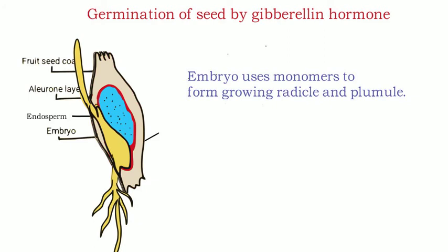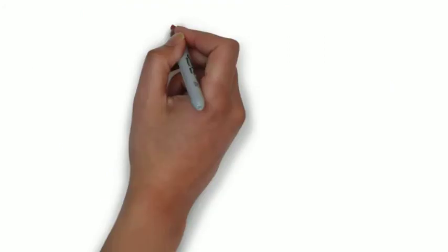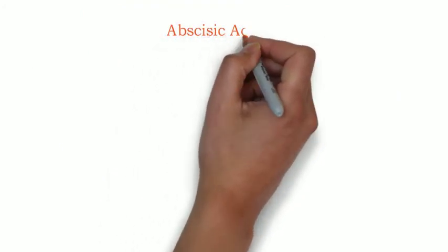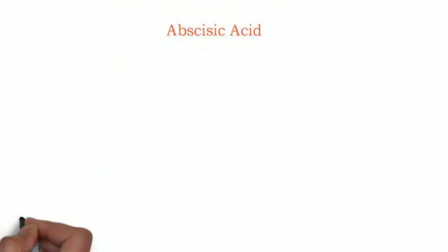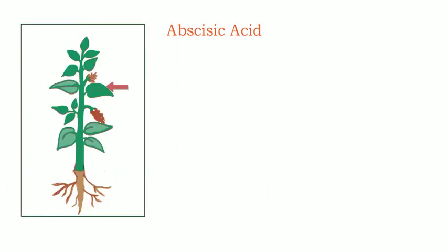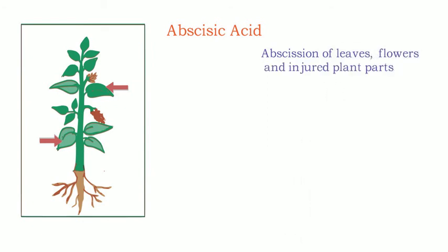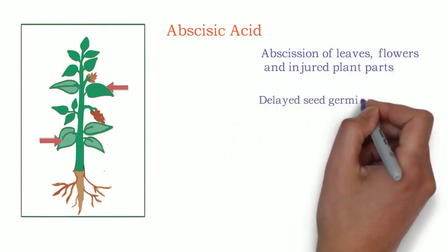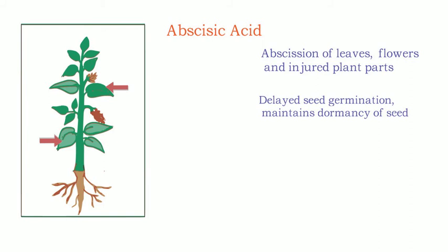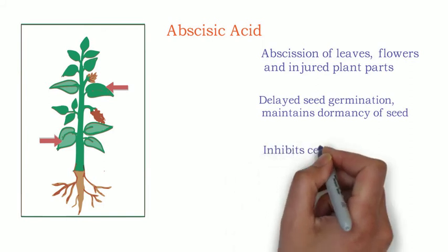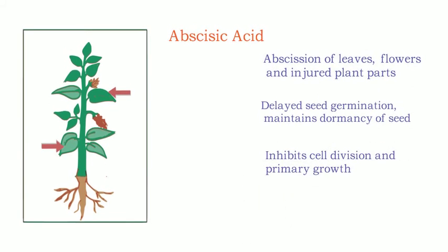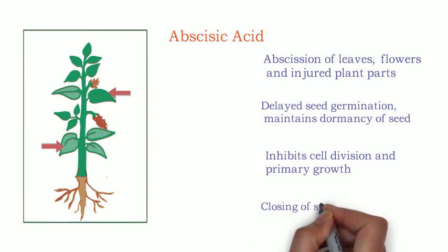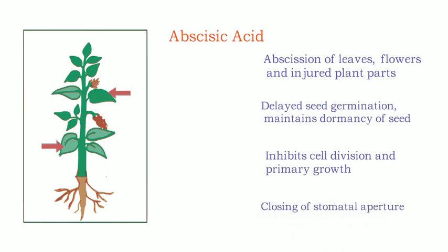So far we have discussed hormones that are growth promoters. Now we will look at growth inhibitor hormones. The next hormone is abscisic acid. The name itself gives an idea about its function — abscission. It is the hormone which helps in abscission of leaves, fruits, and injured plant parts. It also inhibits cell division and retards primary growth in the plant body.